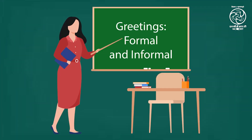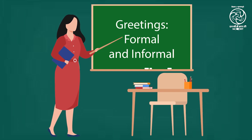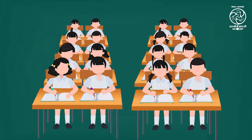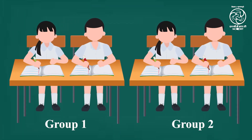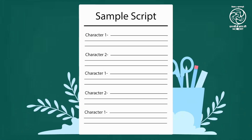In this activity, the teacher will discuss formal and informal greetings. The teacher has to form groups of at least two students in each group in the classroom. After forming the groups, the teacher should ask the students to write a script for an act on any of these situations. The act should include a conversation where they have to say one formal greeting and one informal greeting.